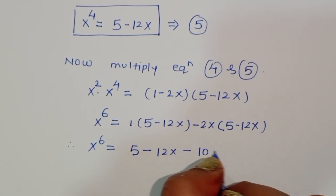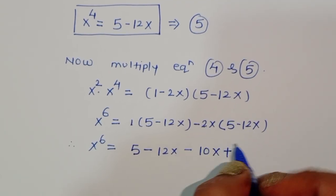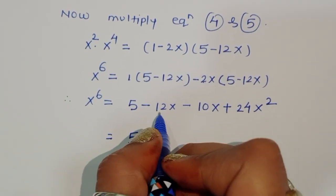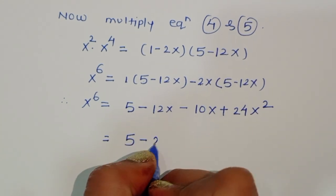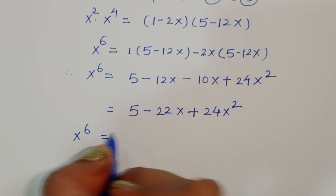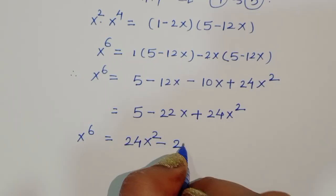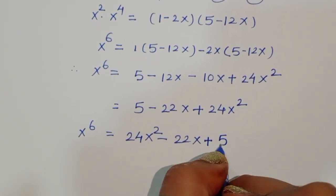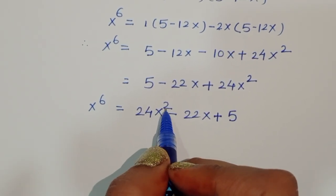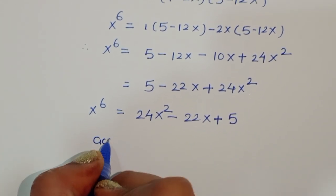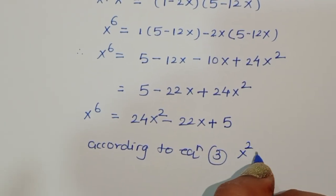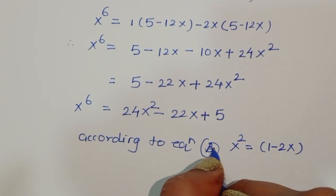Expanding: x to the power 6 equals 5 minus 12x minus 10x plus 24x squared, which gives 24x squared minus 22x plus 5. This is the value of x to the power 6, equation number 6. We already know that x squared equals 1 minus 2x according to equation 4.